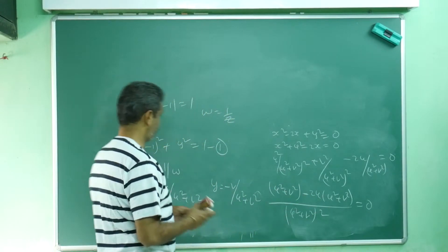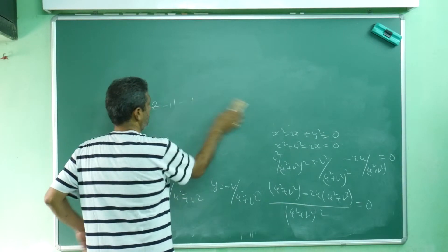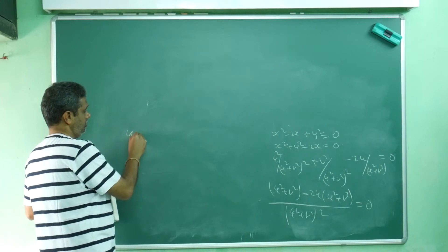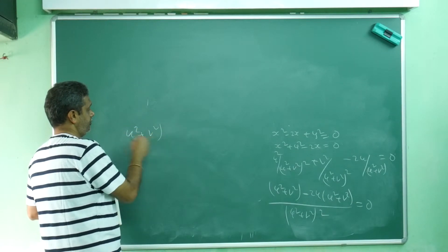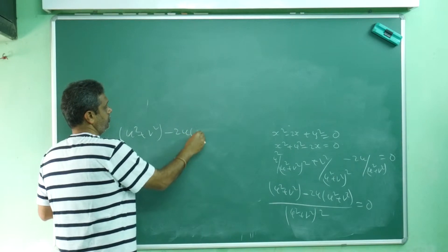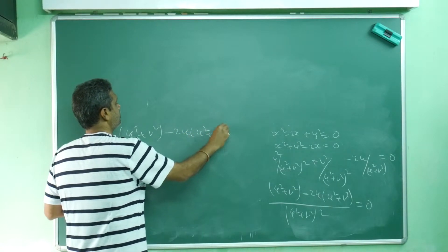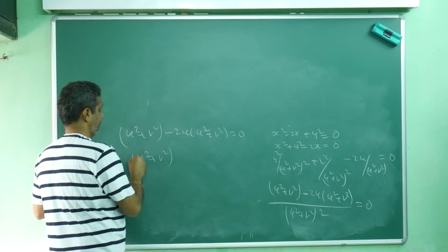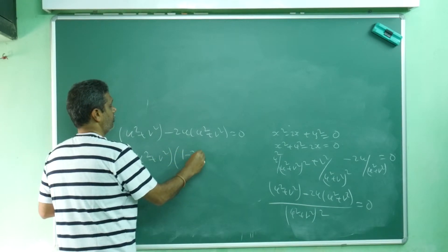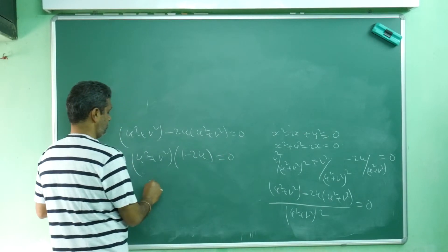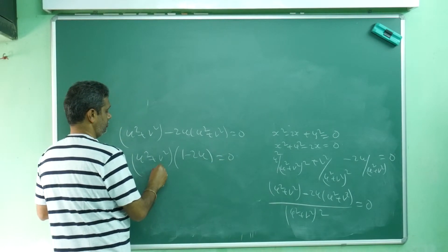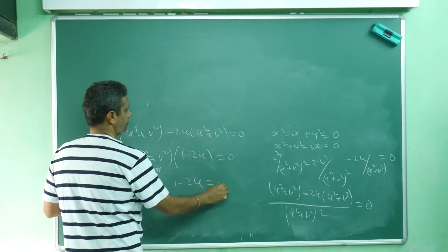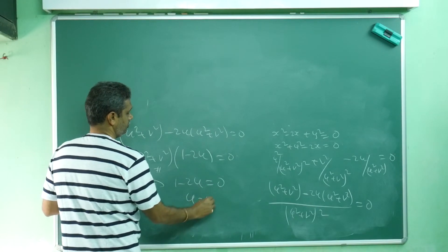This denominator (u²+v²)² obviously cannot be zero. So we have u² + v² - 2u(u²+v²) = 0. Factoring out u²+v², which also cannot be zero since it is |w|², we get 1 - 2u = 0, which gives u = 1/2.